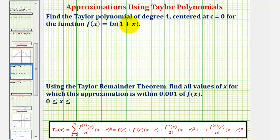We want to find the Taylor polynomial of degree four centered at c equals zero for the function f of x equals natural log of the quantity one plus x. Then we want to use the Taylor remainder theorem to find all the values of x for which this approximation is within 0.001 of the true function value f of x.